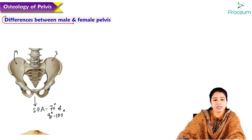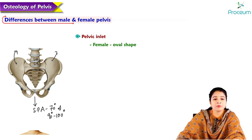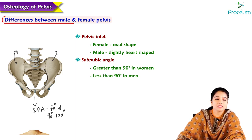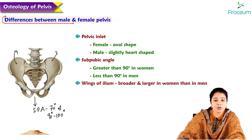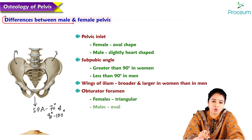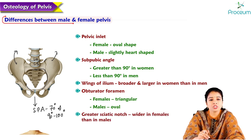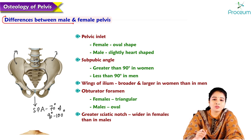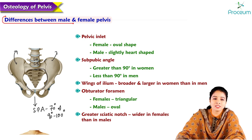In summary, the female pelvic inlet is oval whereas the male pelvic inlet is slightly heart-shaped. The subpubic angle is greater than 90 degrees in women (90–100°) and less than 90 degrees in men (around 70°). The wings of the ileum are broader and larger in women. The obturator foramen appears triangular in women and oval in men. The greater sciatic notch is more widened in women than in men.